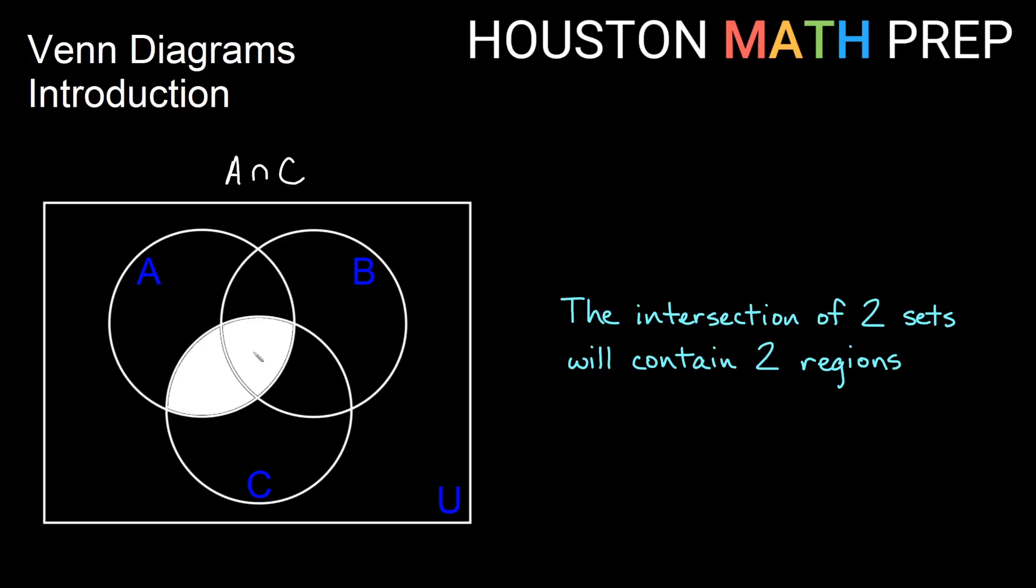So these two regions are the two regions that are both in the A circle, and they're also in the C circle. And if we look at something like B intersect C, then that will be the regions that are inside of the B circle that are also inside of the C circle.